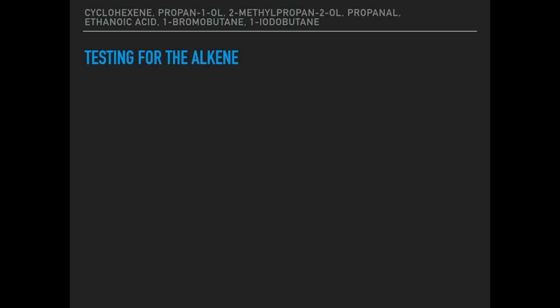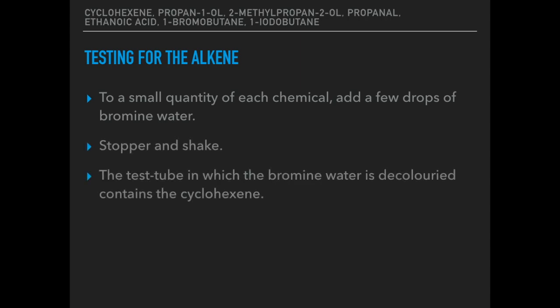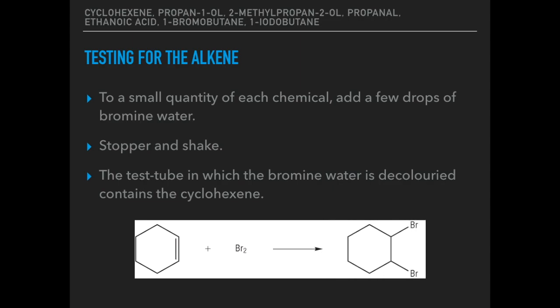Across the top of each slide I'm listing the substances that remain. This is the first test and we've got all of them so far. I've chosen to test for the alkene first. To a small quantity of each chemical, add a few drops of bromine water, stopper and shake. The test tube in which the bromine water is decolourised must be the one that contains the cyclohexene. The chemical equation can be written for the addition reaction across the double bond.